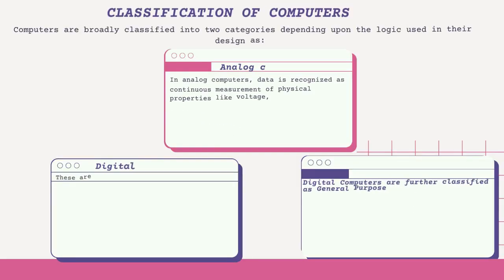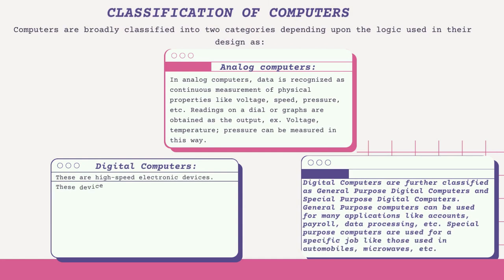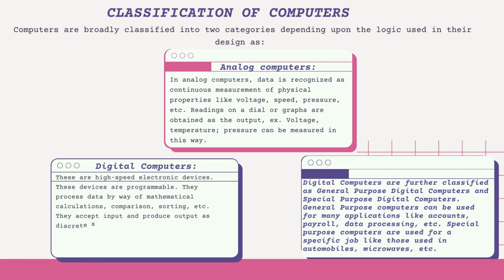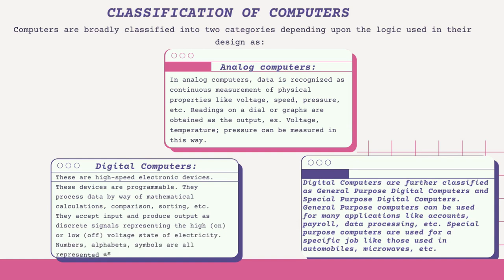Classification of Computers. Computers are broadly classified into two categories depending upon the logic used in their design: analog computers and digital computers. In analog computers, data is recognized as a continuous measurement of physical properties like voltage, speed, pressure, etc. Readings on a dial or graphs are obtained as the output. Voltage, temperature, and pressure can be measured in this way.